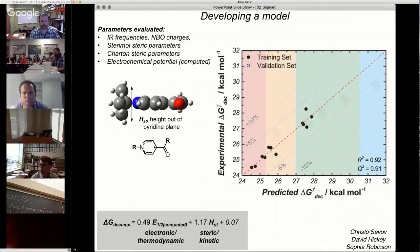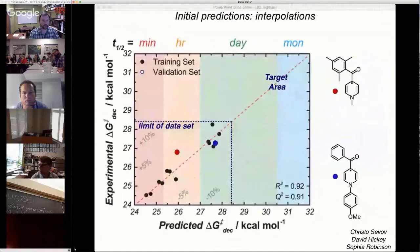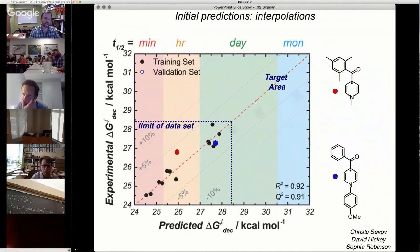When we do these types of correlations, the first things we do is we interpolate. We predict a couple molecules that are within range of the data set. This is always the way to find out if your model is robust. Because if you extrapolate, you can often fail and you don't know if it's a model problem or something else. What we find here is these interpolate very well.